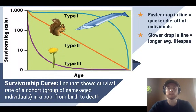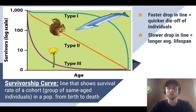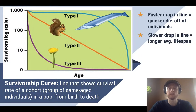Here we have our classic survivorship graph, and the three lines or curves represent the three basic types of survivorship. The survivorship curve shows how many individuals are still alive in a cohort born at the same time. The faster the curve decreases — such as in type three organisms like the dandelion — the faster they're dying off, meaning fewer of them are surviving early in life.